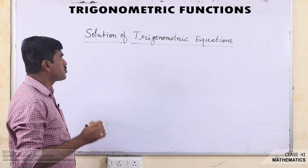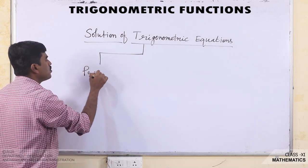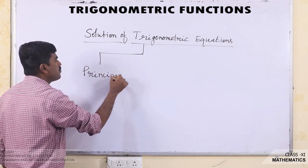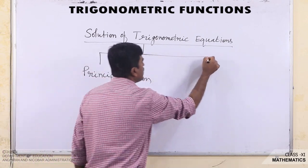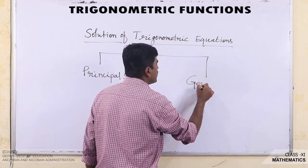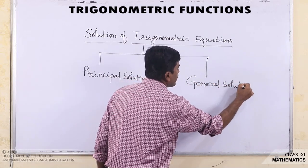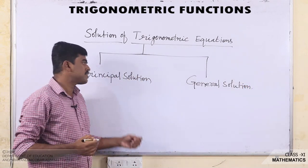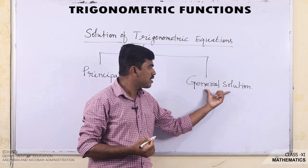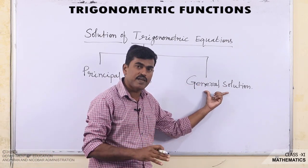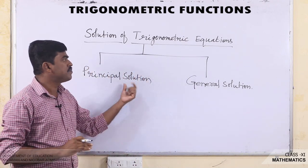There are two types of solutions in a Trigonometric equation. The first one is the principal solution and the second is the general solution. Today we will discuss only the principal solution, as the general solution has been deleted from your syllabus for this session.